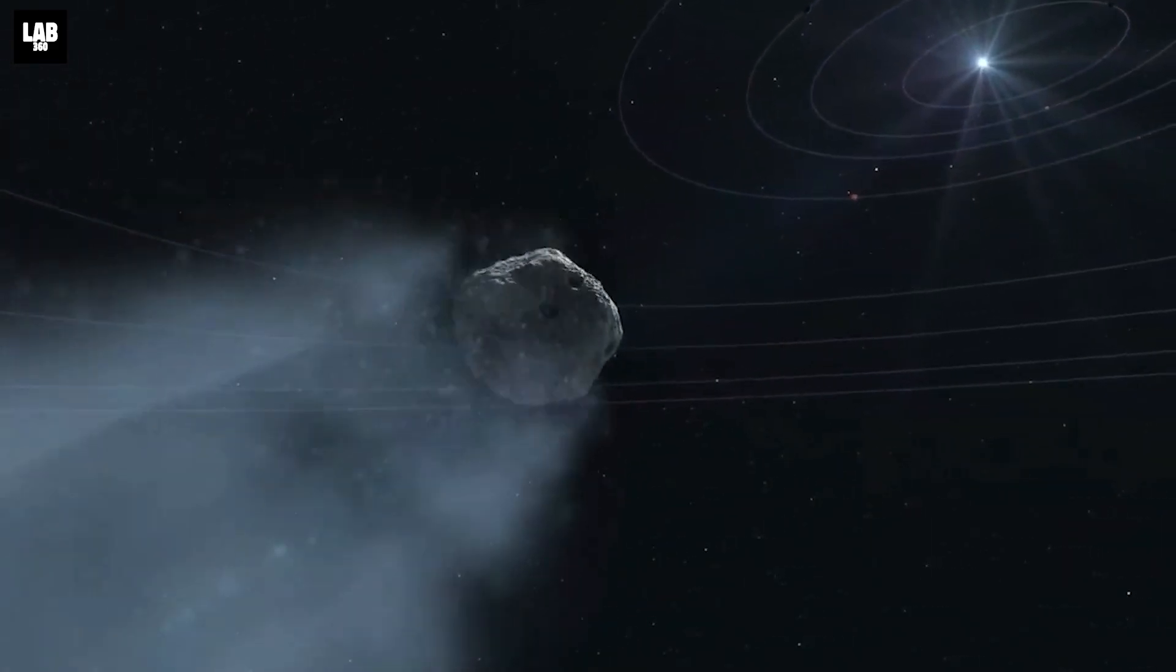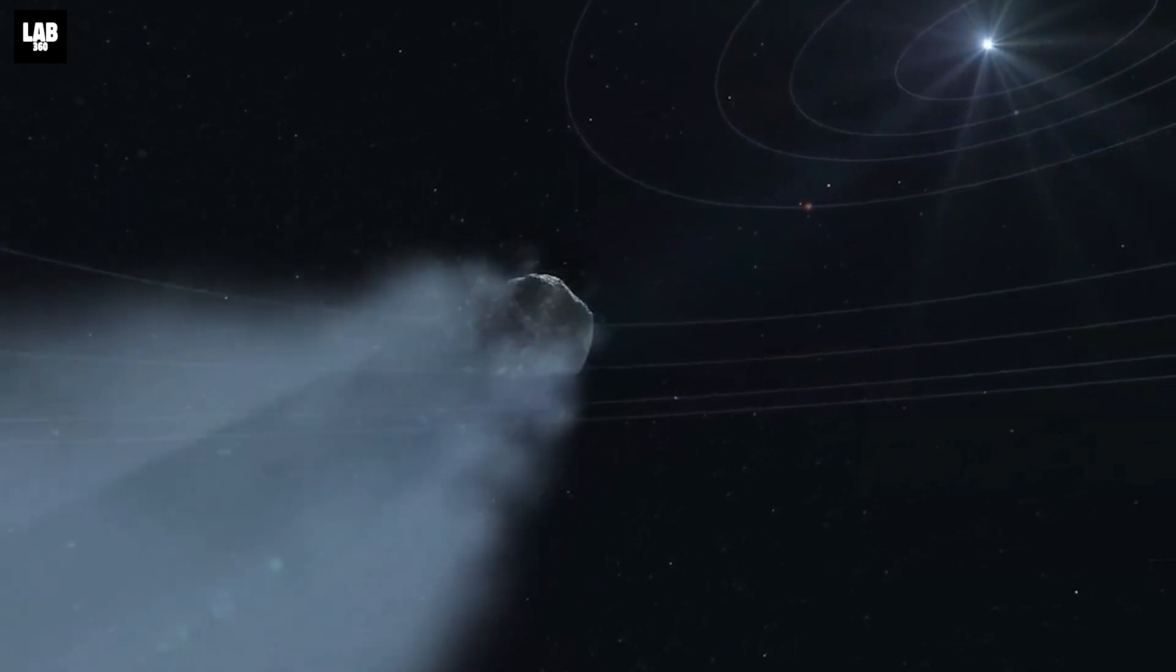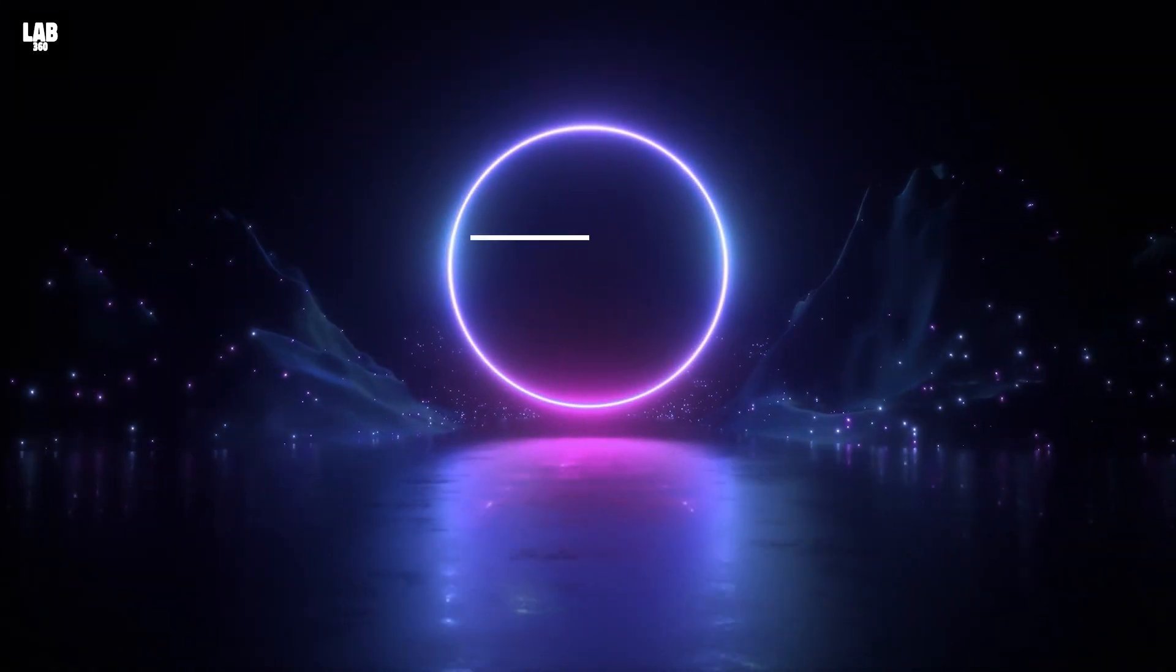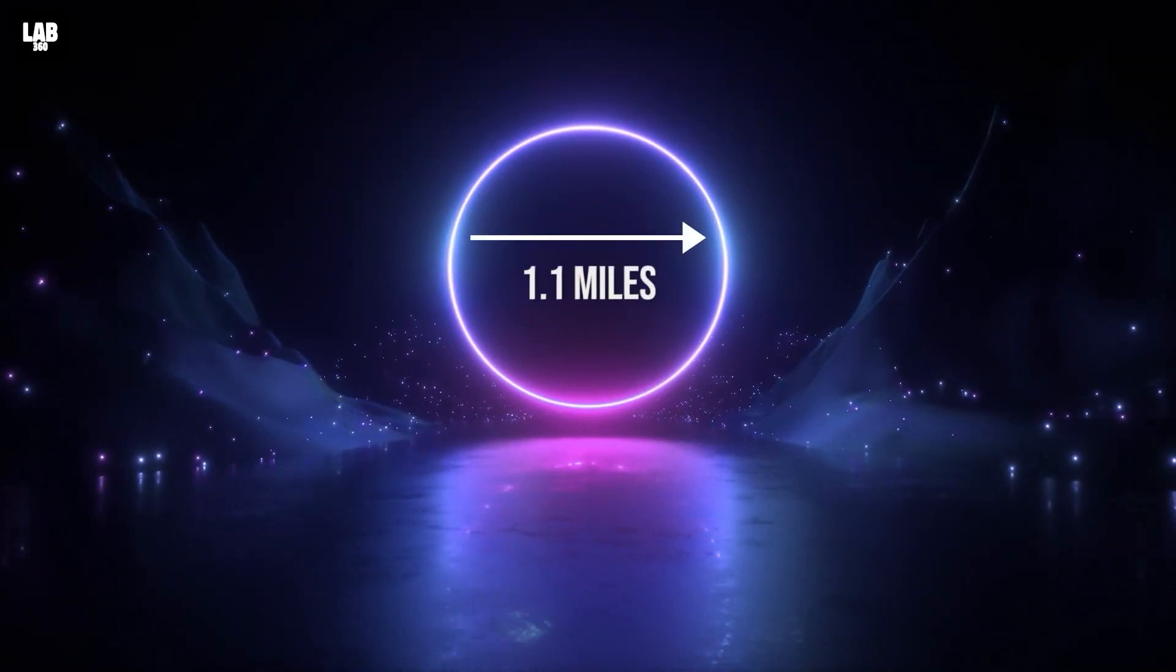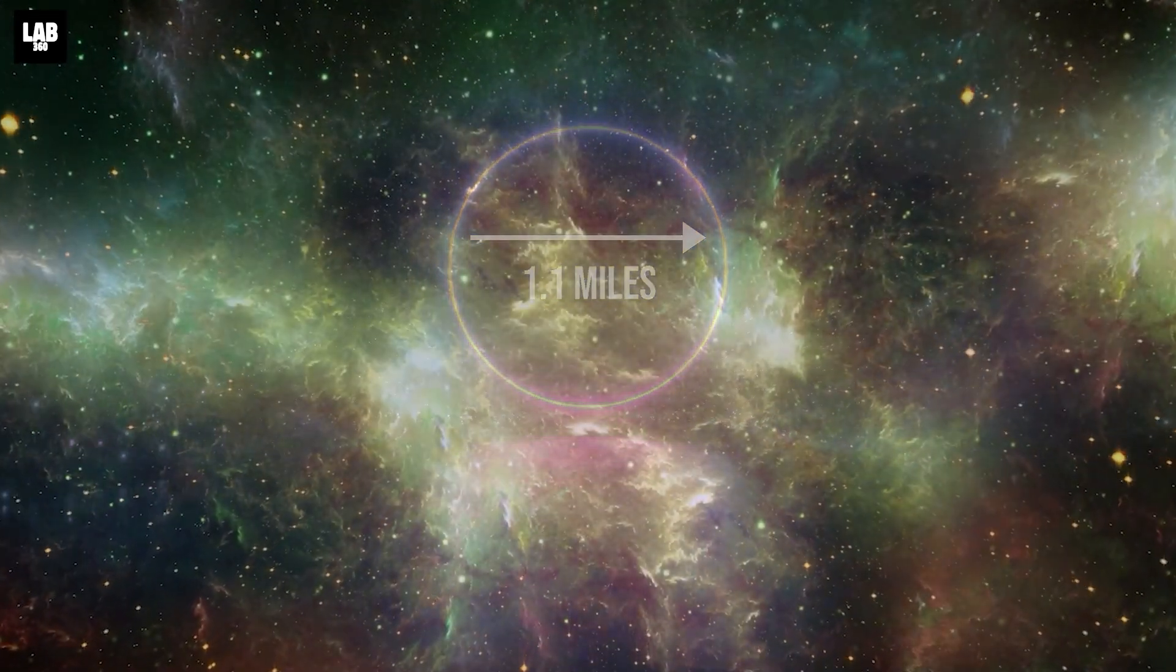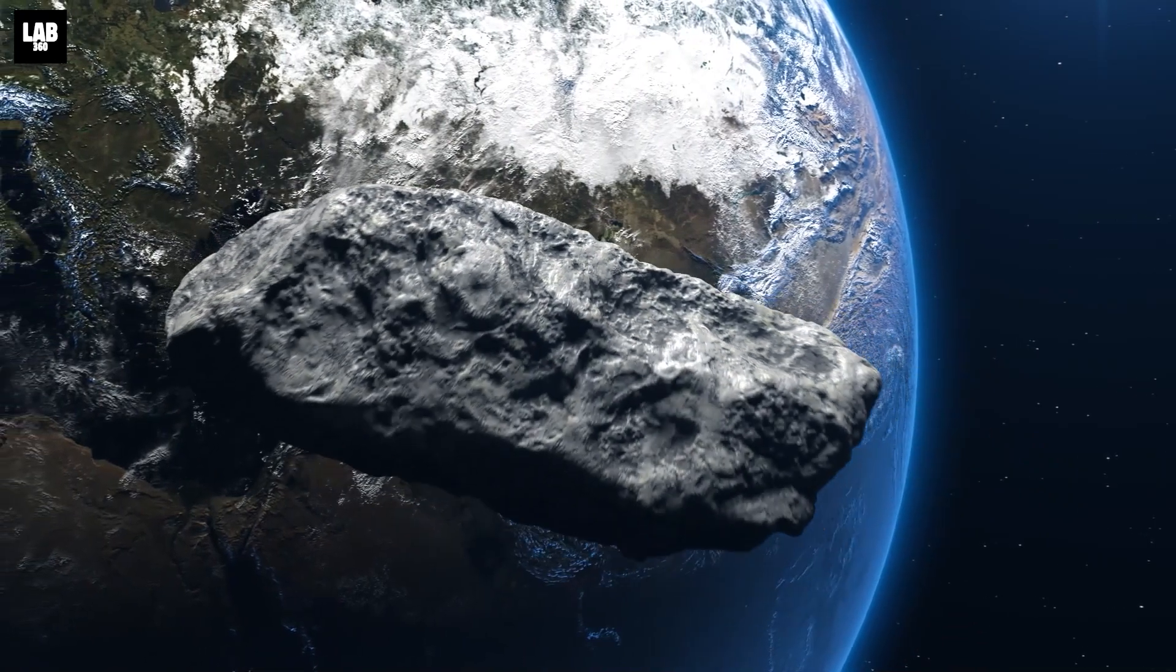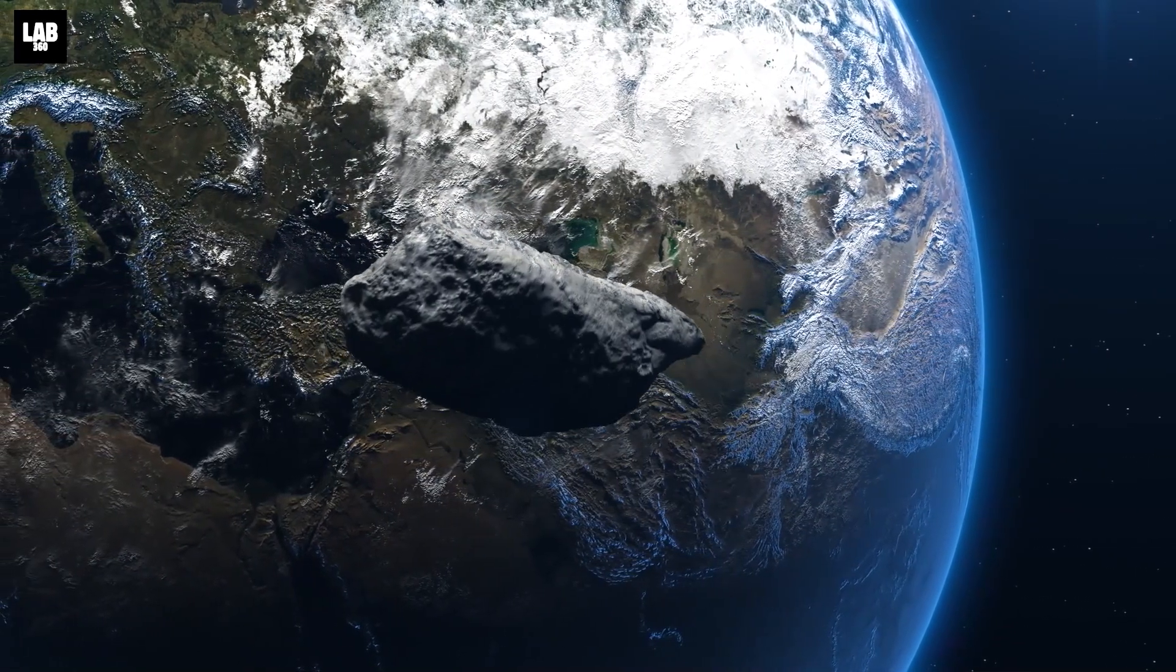NASA's database reveals that there is an even larger space rock on its way, with its diameter estimated to be 1.1 miles across. But we will burn that bridge when we get to it. For now, it's 2008 AG 33 that is closing in on us.